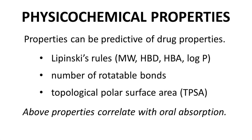Around 2,000 compounds have been approved as drugs, and people have studied these compounds intensively to identify trends in what kinds of molecules become drugs. Many insights have been gained by examining physicochemical properties of molecules. For example, Lipinski's rules are based upon four different physicochemical properties: molecular weight, hydrogen bond donors and acceptors, and log P, a measure of lipophilicity.